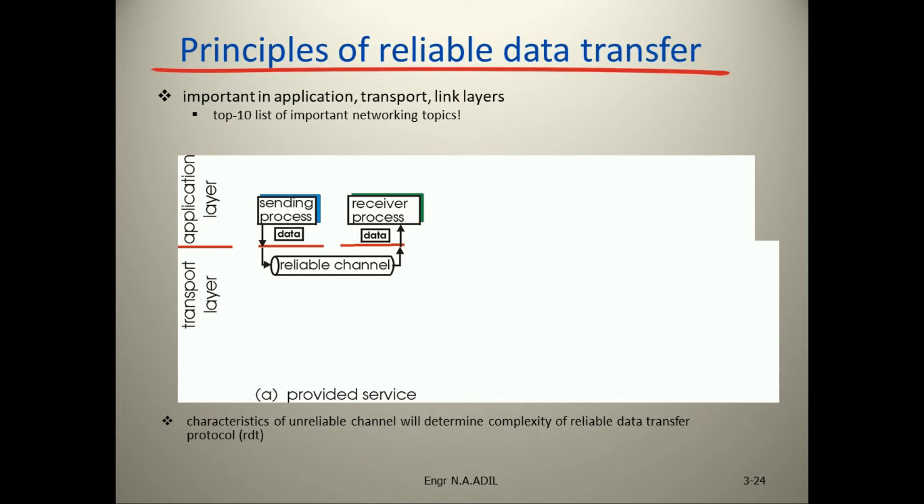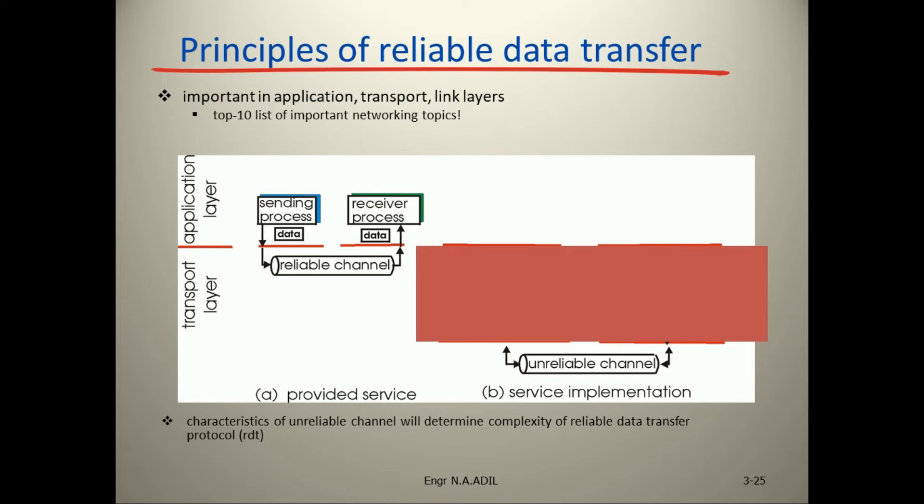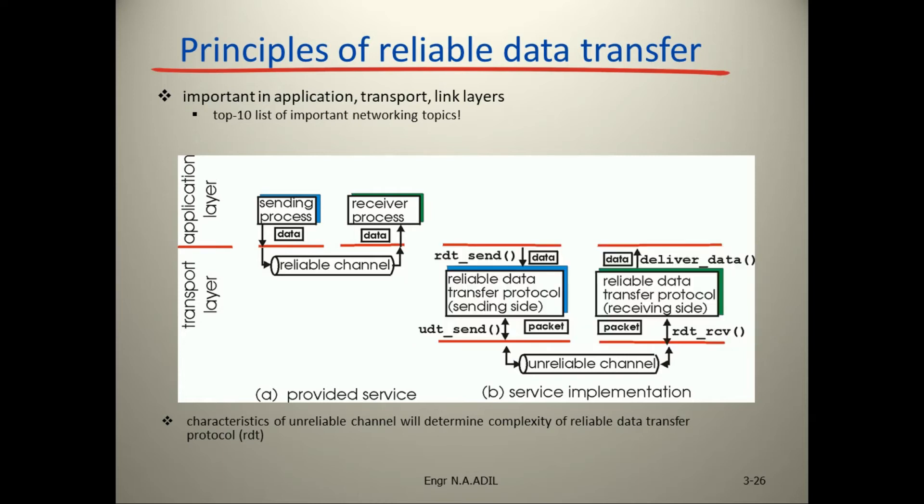Here is the red line. Above the red line is the application layer, and below the red line is the transport layer. The sending process and receiving process are above the red line, and the transport layer is responsible for sending the data. It is a reliable channel that is provided as a service.